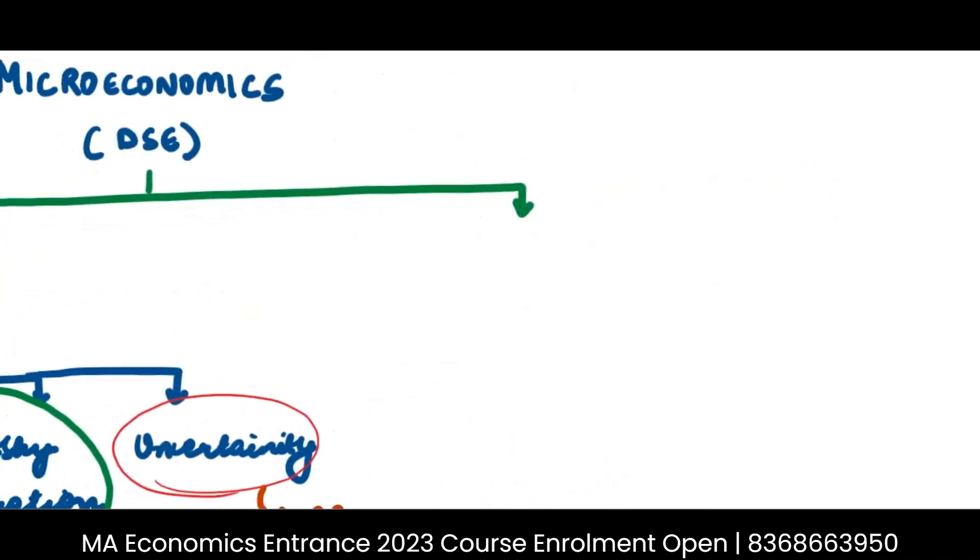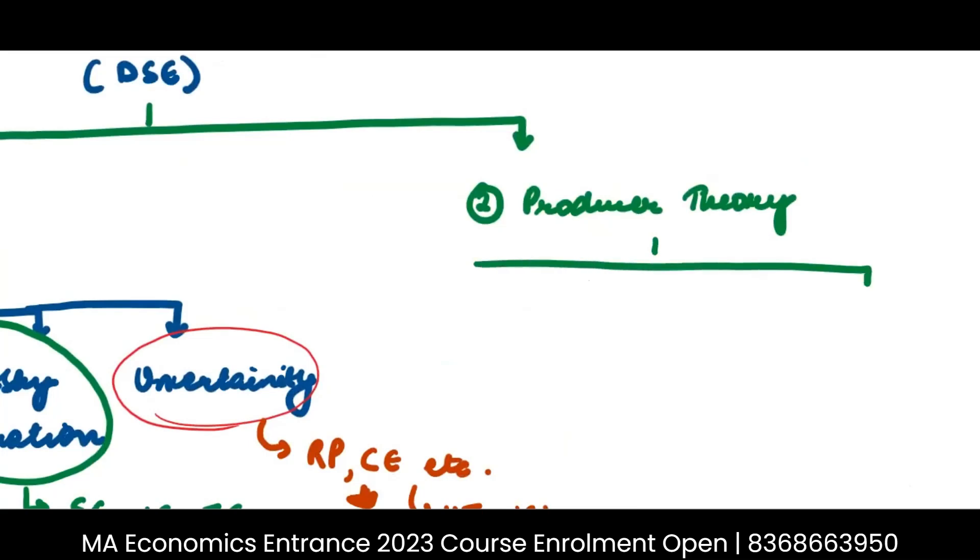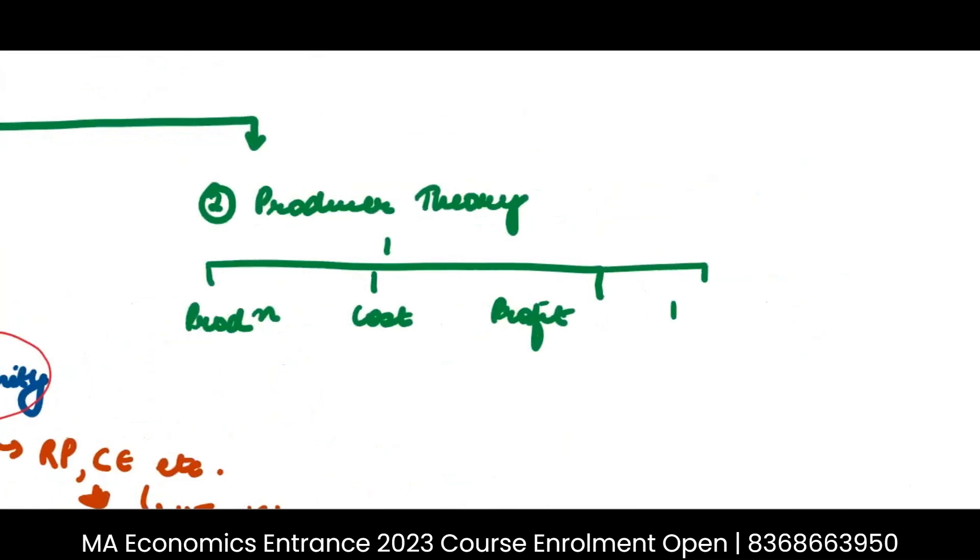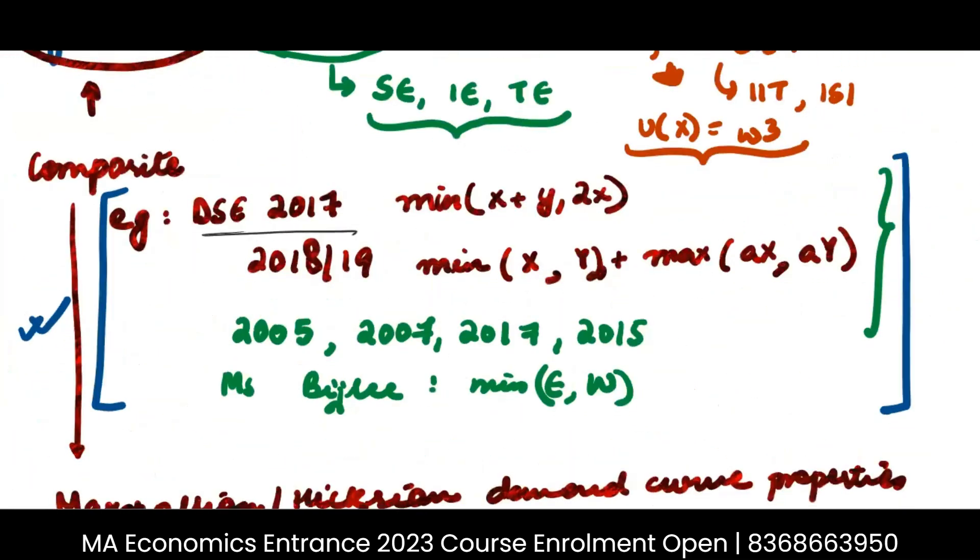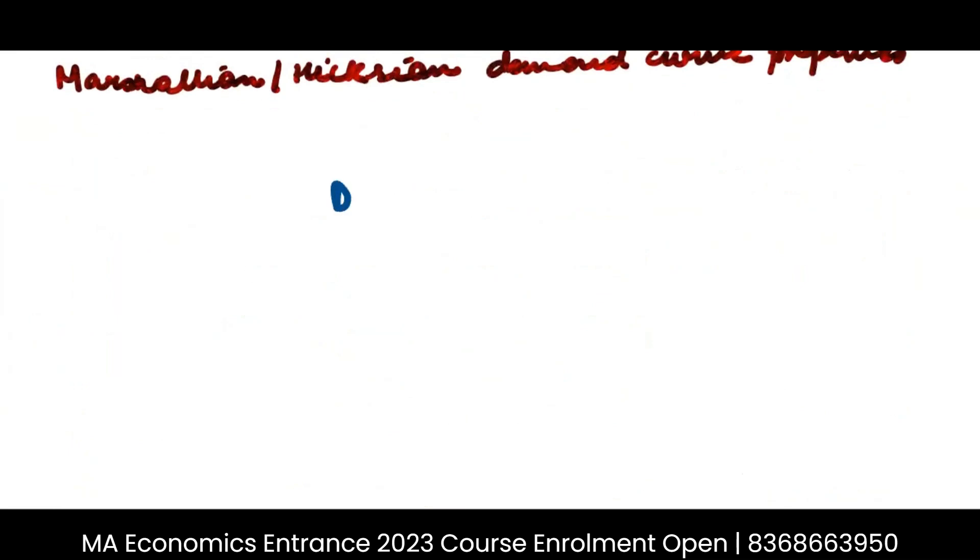Now, the second part that you should be focusing on is your producer theory. Majorly in the production theory, you should be focusing on your production functions, on the cost function, on profit, on monopoly, and on oligopoly. So for example, we have seen that in DSE, and you have to go through all the past year questions for related to a particular topic. So you pick up on a topic. This is what I usually prefer to do. If I start with, for example, consumer theory,